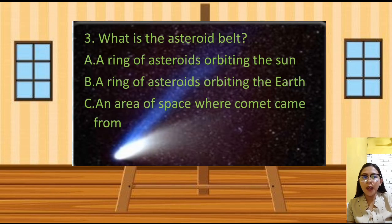Number 3. What is the asteroid belt? Yes, it's letter A. A ring of asteroids orbiting the sun.